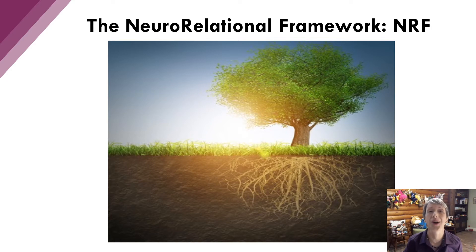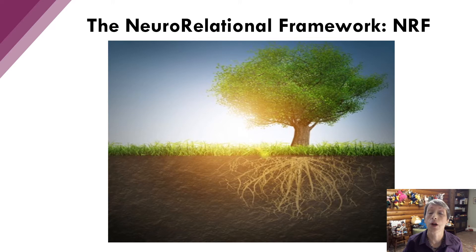Let's start with step one. The grounded roots of the tree represent step one. Like the roots of a tree, our nervous system needs to be grounded. When the roots of the tree are deep and spread out, they provide stability to the tree and support flexible, healthy growth of the trunk and the branches. Like the roots of the tree, our nervous system needs to be stable and flexible.